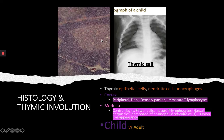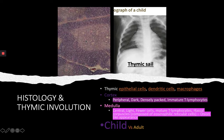Here we have a microscopic picture of a thymus in a child. You can see this darker peripheral area which is the cortex — here are densely packed immature T lymphocytes. These T lymphocytes will later migrate into the medulla, this lighter area, where they will mature.